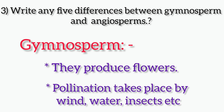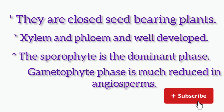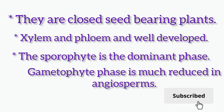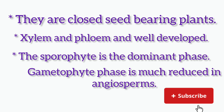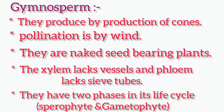Third detail: write any five differences between gymnosperm and angiosperm. Angiosperms: they produce flowers; pollination takes place by wind, water, and insects; they are closed seed-bearing plants; xylem and phloem are well developed; the sporophyte is the dominant phase; gametophyte phase is much reduced. Gymnosperms: they reproduce by production of cones; pollination is by wind; they are naked seed-bearing plants; xylem lacks vessels and phloem lacks sieve tubes; they have two phases in their life cycle — sporophyte and gametophyte.